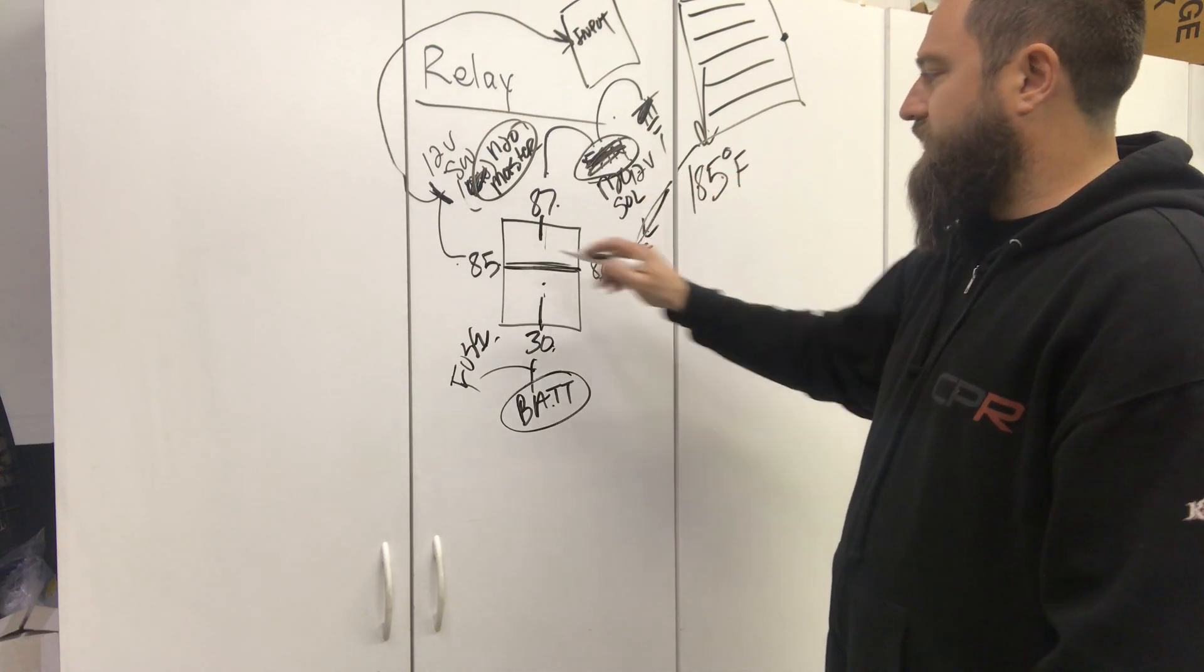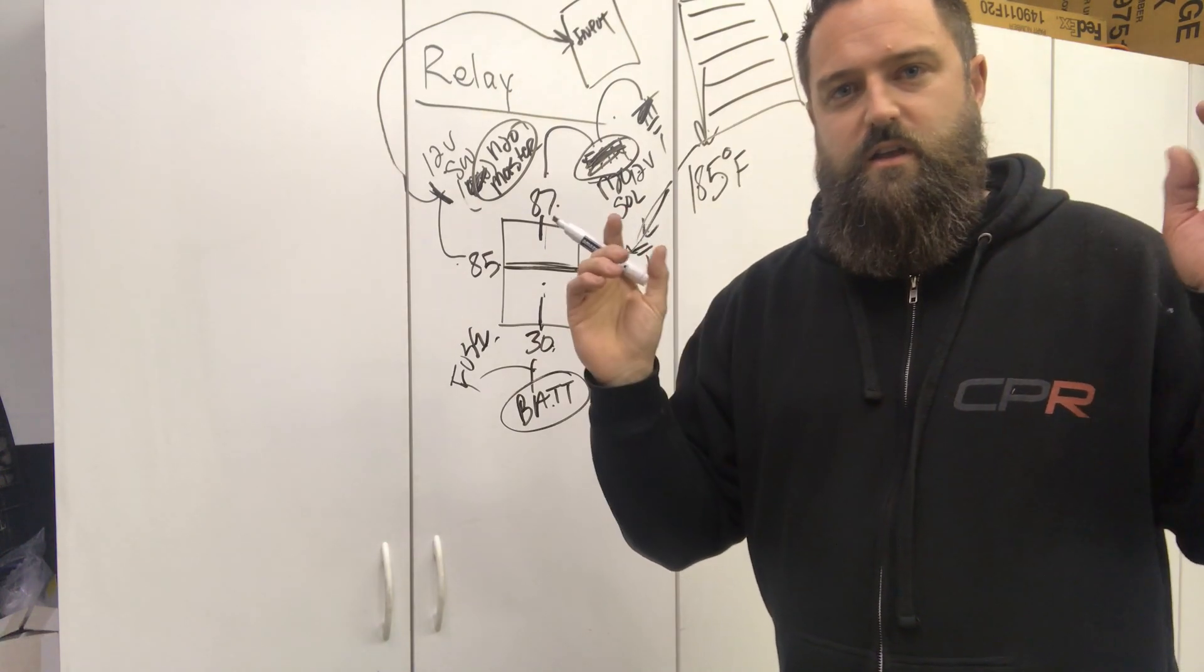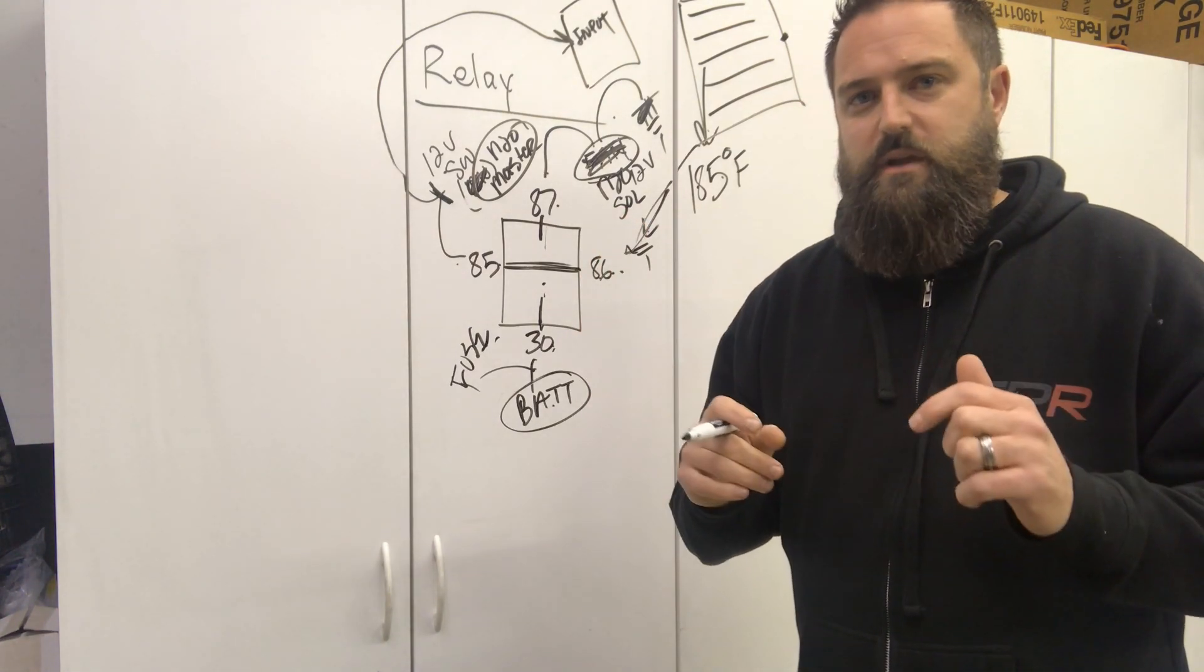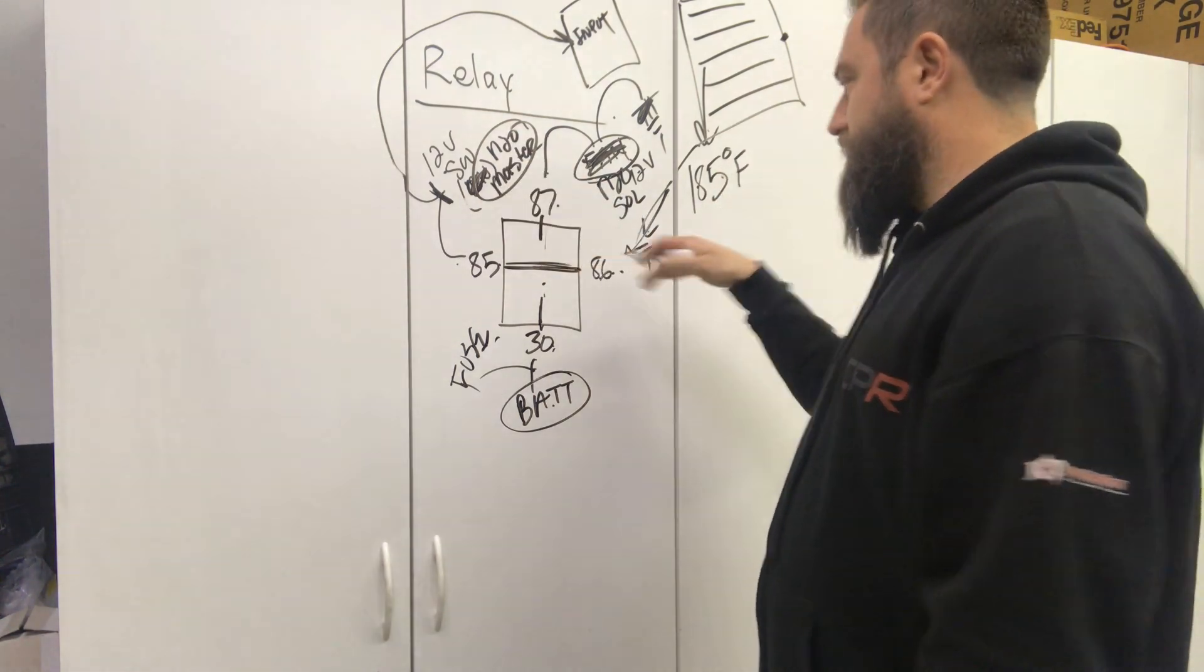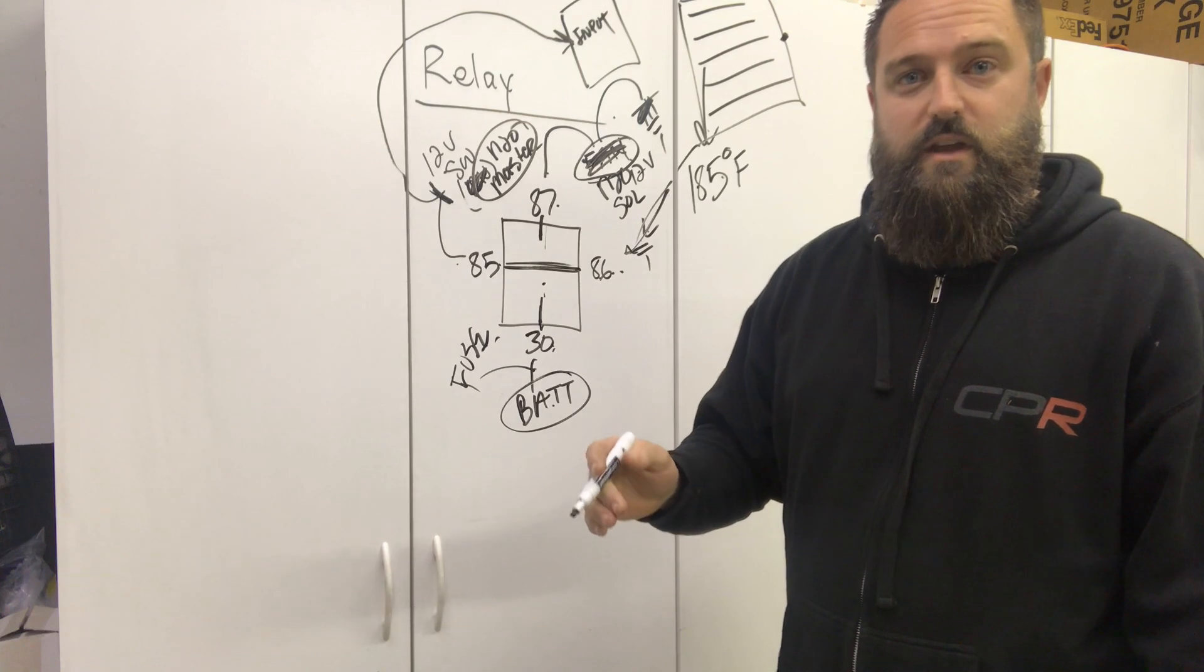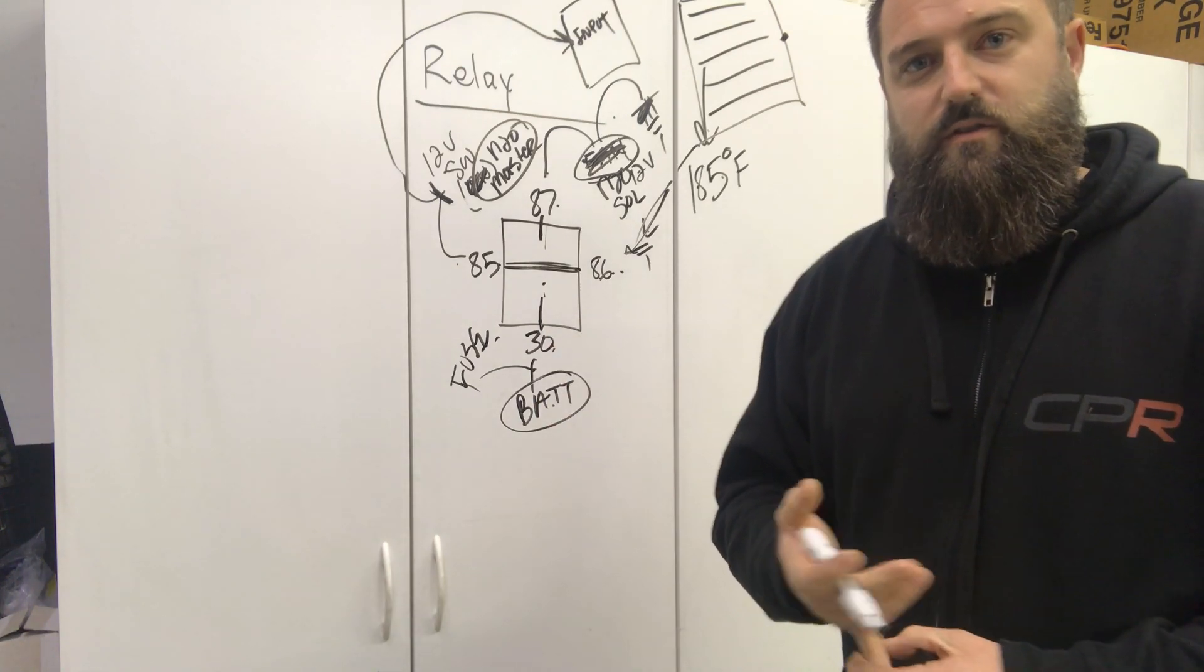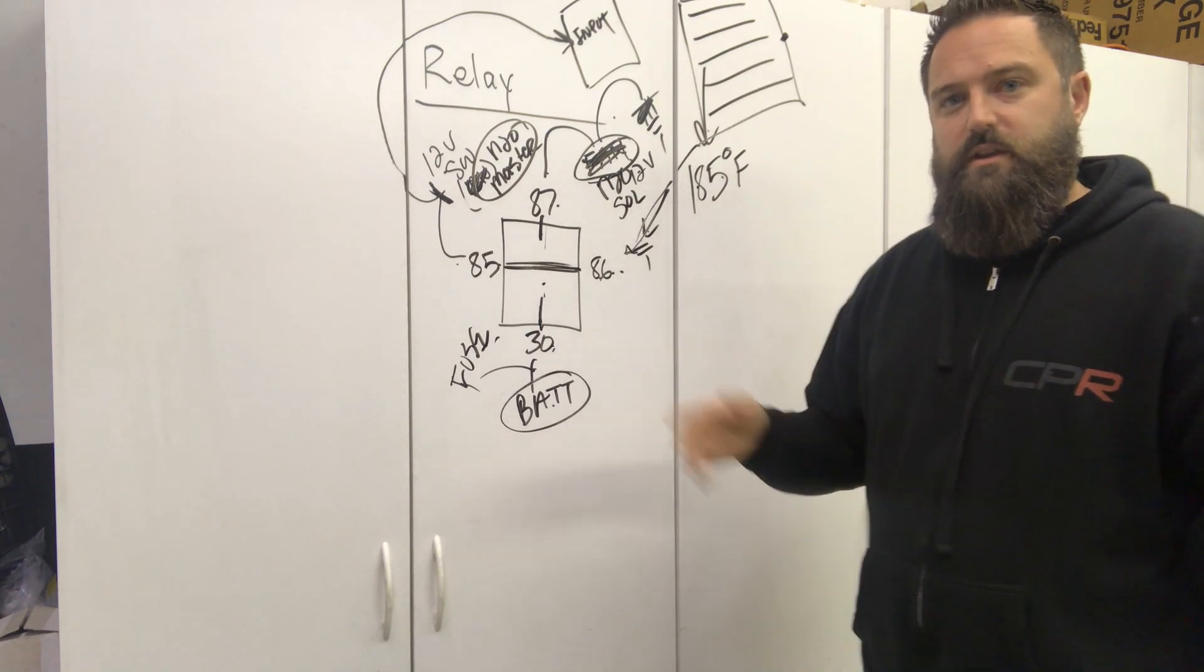But keep in mind, the 86 and 85 side of the equation, very low current, doesn't need to be big wire, doesn't need to be anything too fancy. Just think about how you want to switch it and know that the ECU can do this half of the equation for you. You can use this for an intercooler fan to turn on at a certain temperature, a purge solenoid, a transmission fan, all those things.